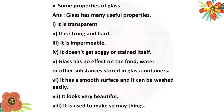Some properties of glass: Glass has many useful properties — it is transparent, it is strong and hard, it is impermeable and doesn't get soggy or stained. Glass has no effect on food, water or other substances stored in a glass container. It has a smooth surface and can be washed easily. It looks very beautiful and is useful to make so many things. Here we completed our third question.